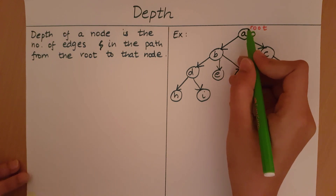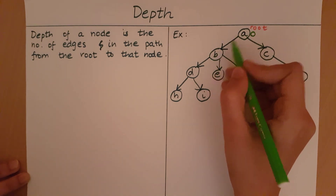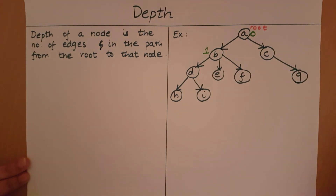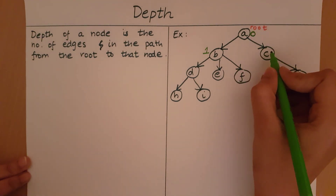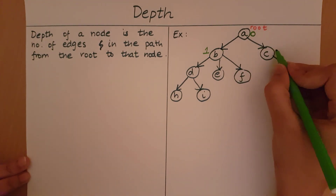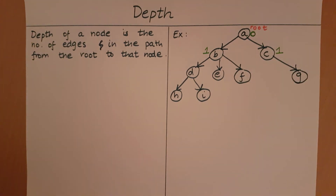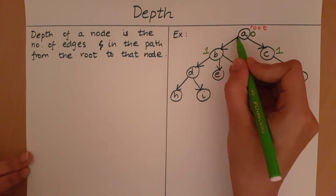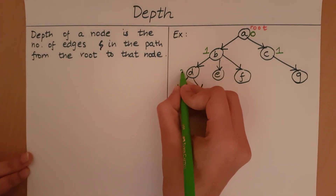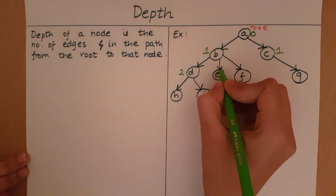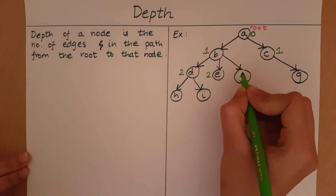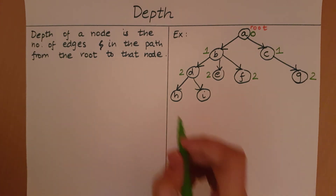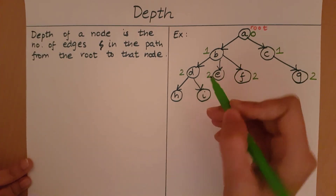The path from the root A to node B has one edge, so the depth of B is one. Similarly, the number of edges from A to C is one, so the depth of C is also one. For D, the number of edges from A to D is two. Similarly for E, F, and G — they all have a depth of two.